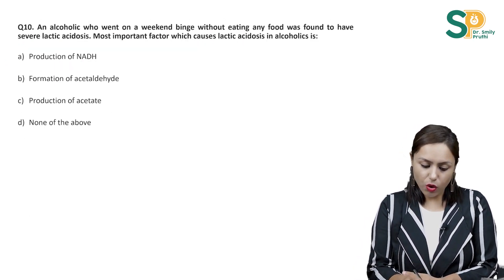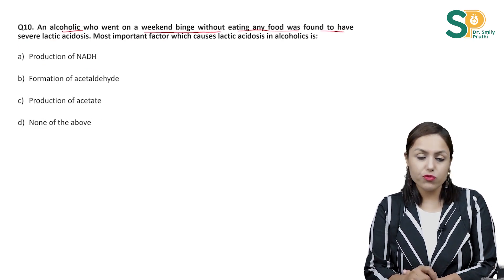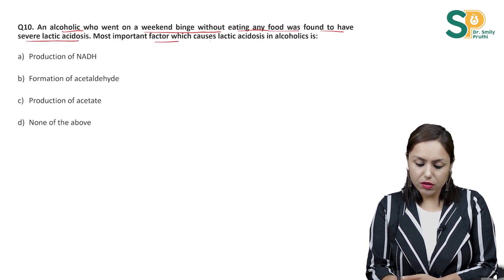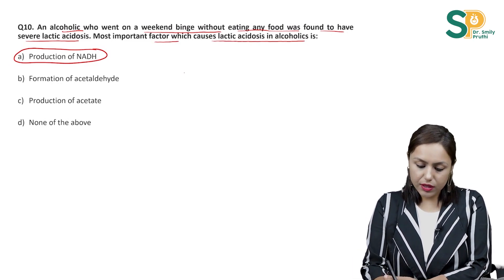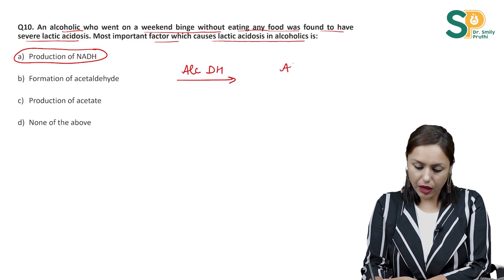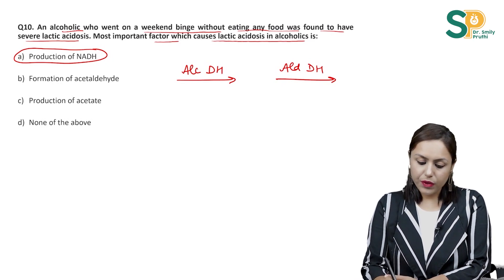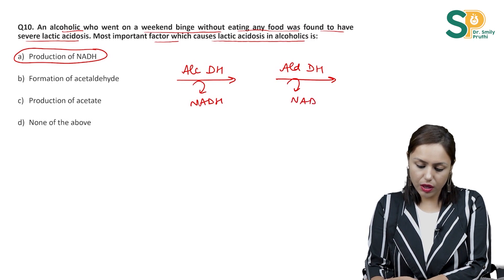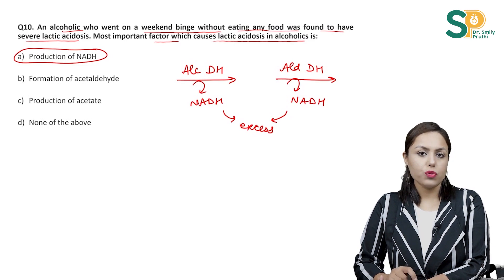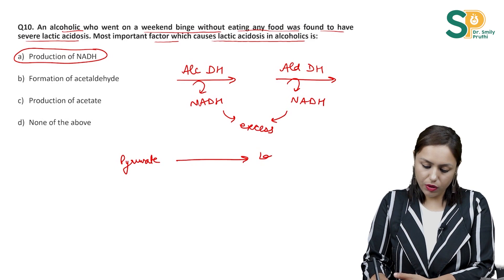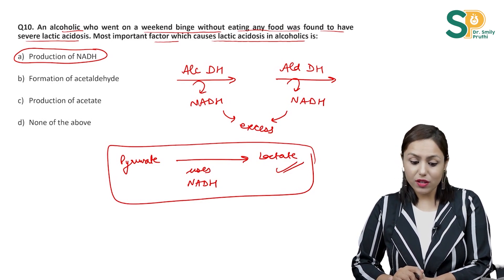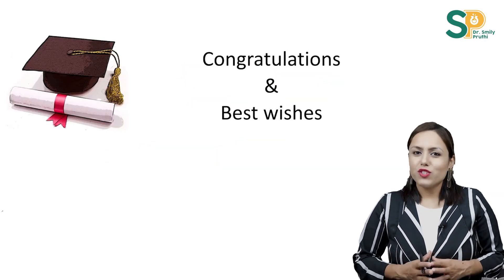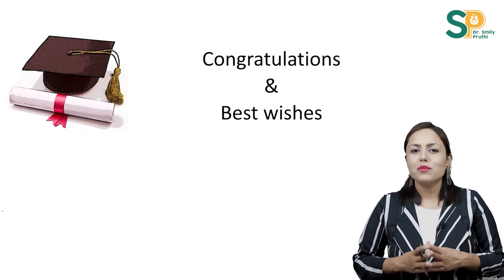Coming to the last question: An alcoholic who went on a weekend binge without eating any food was found to have severe lactic acidosis. The most important factor causing lactic acidosis in alcoholics is the production of NADH. Two enzymes — alcohol dehydrogenase and aldehyde dehydrogenase — are both dehydrogenases that produce NADH in alcohol metabolism, leading to excess NADH. This excess NADH drives the reaction converting pyruvate to lactate, producing large amounts of lactic acid and resulting in lactic acidosis. The answer is excess NADH production. Congratulations for completing the video and best wishes for your future exams.